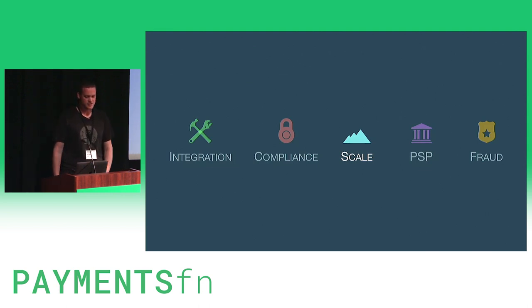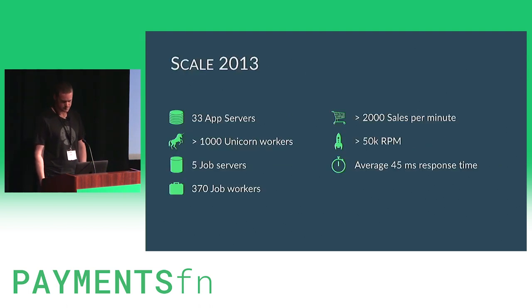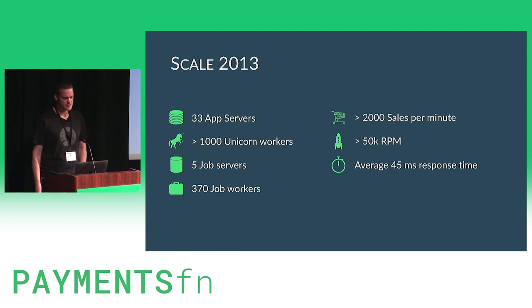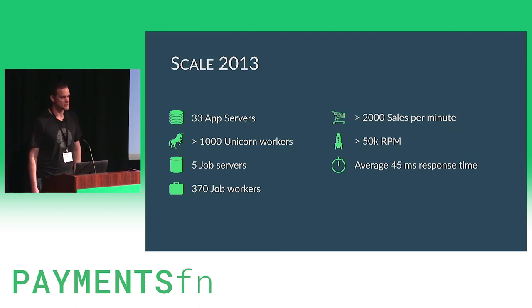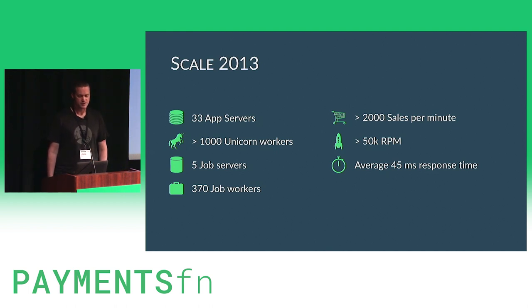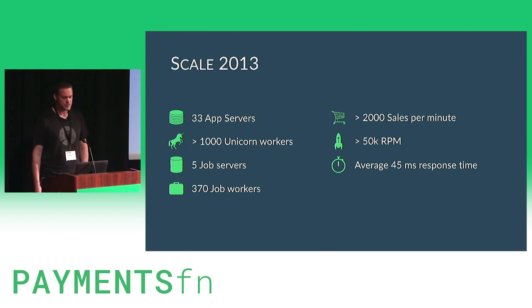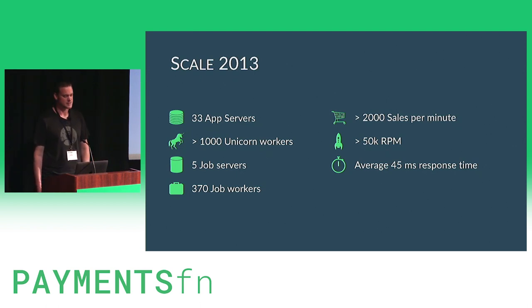Now the third challenge we ran into was scaling all of it. In 2013, when we really started focusing on scaling this, every payment request we made held up an app server process until it was completed, because we were making the payment request inline. Normally this was fine, but it wasn't uncommon for some payment gateways to have very long response times, sometimes over five seconds. This meant we could exhaust resources or kill requests and potentially drop successful payments if there were any spikes in request volume.